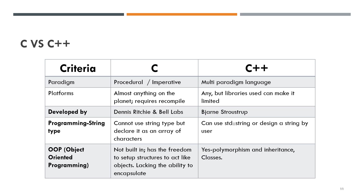C versus C++. The paradigm for C is procedural or imperative, whereas C++ is multi-paradigm. The platform for C is almost anything; C++ can be any, but libraries used can make it limited. C was developed by Dennis Ritchie at Bell Labs, whereas C++ was developed by Bjarne Stroustrup. C cannot use string type but declares it as an array of characters, while C++ can use std::string or a user-defined string. C does not have OOP features, but C++ has OOP features including polymorphism, inheritance, and classes.